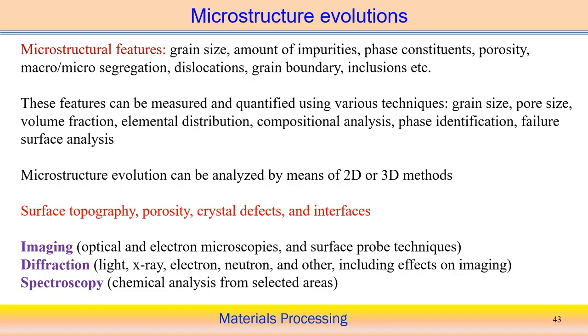We should understand what measurement techniques or instruments can be utilized to measure all these microstructural features. These features can be measured and quantified using different techniques. For example, grain size, pore size — different techniques are applicable to measure grain size, pore size, second phase particles, volume fraction of a particular phase, and elemental distribution. We often require compositional analysis — what is the composition of the metal after solidification, or if there are any composition changes.